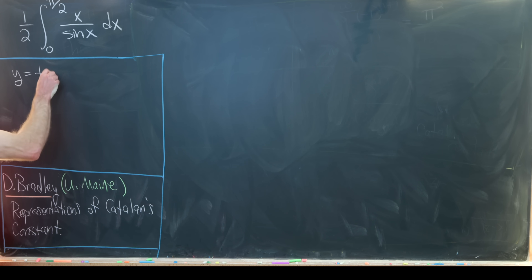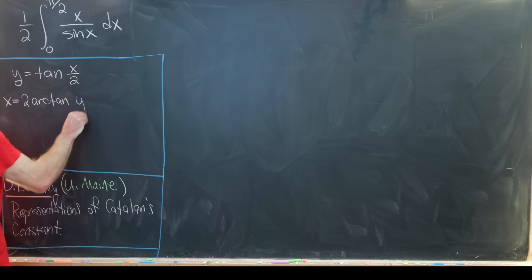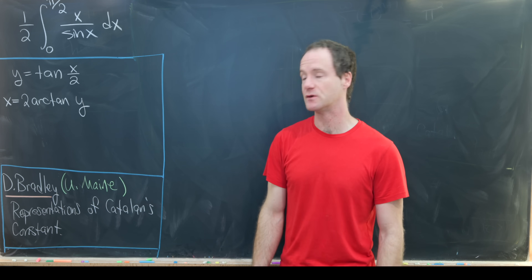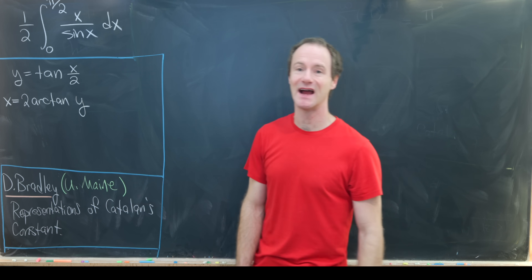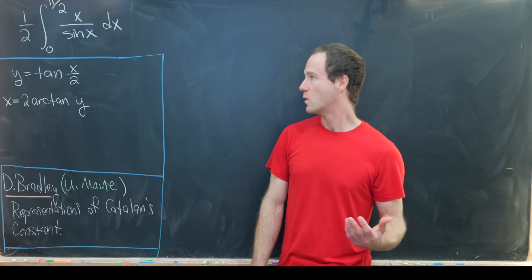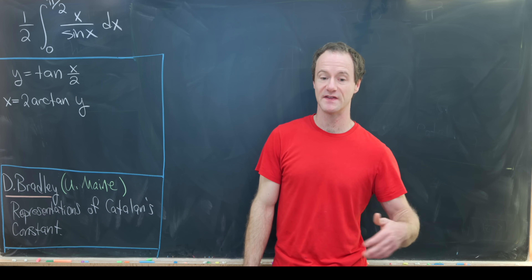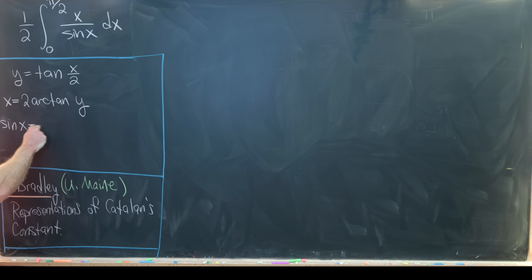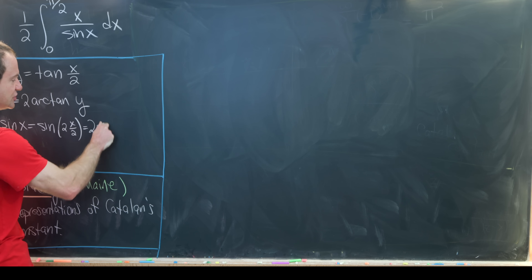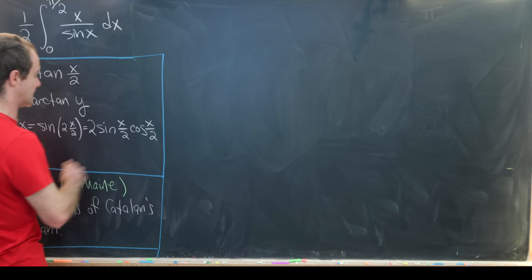We're going to start with the substitution y = tan(x/2), which means x = 2·arctan(y) — that's what we get by applying the inverse tangent to both sides and then multiplying by 2. Now let's find sin(x) under this substitution. Since we have sin(x) and tan(x/2), we want to write sin(x) in terms of sin(x/2) using a double angle formula: sin(x) = sin(2·(x/2)) = 2·sin(x/2)·cos(x/2).